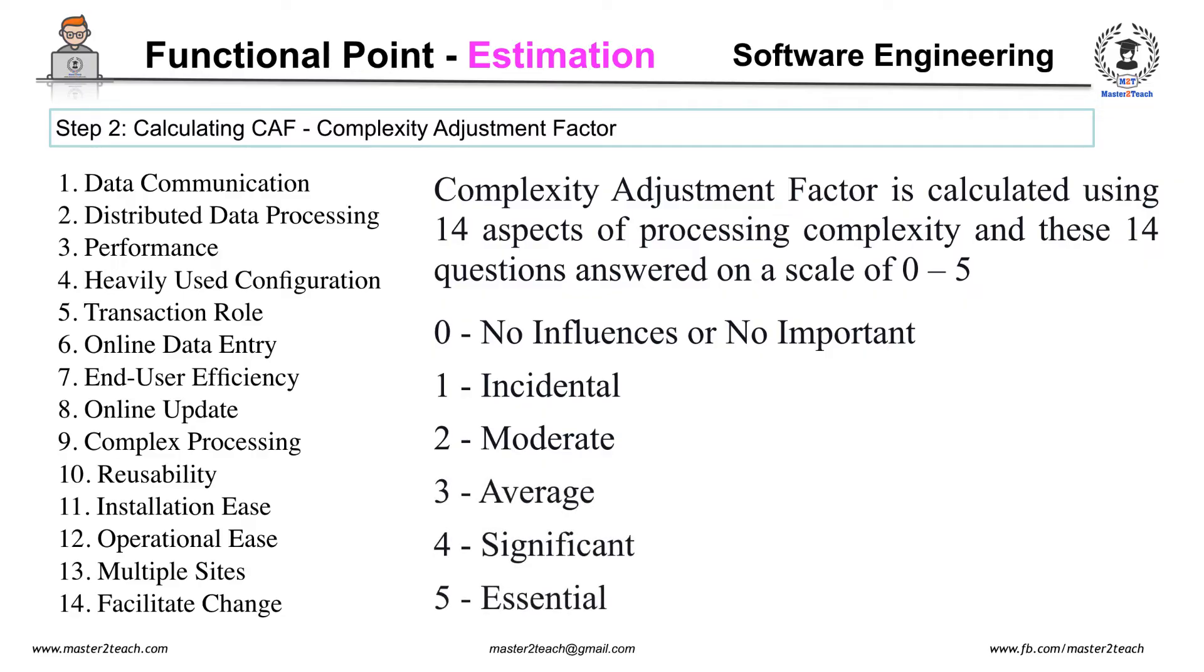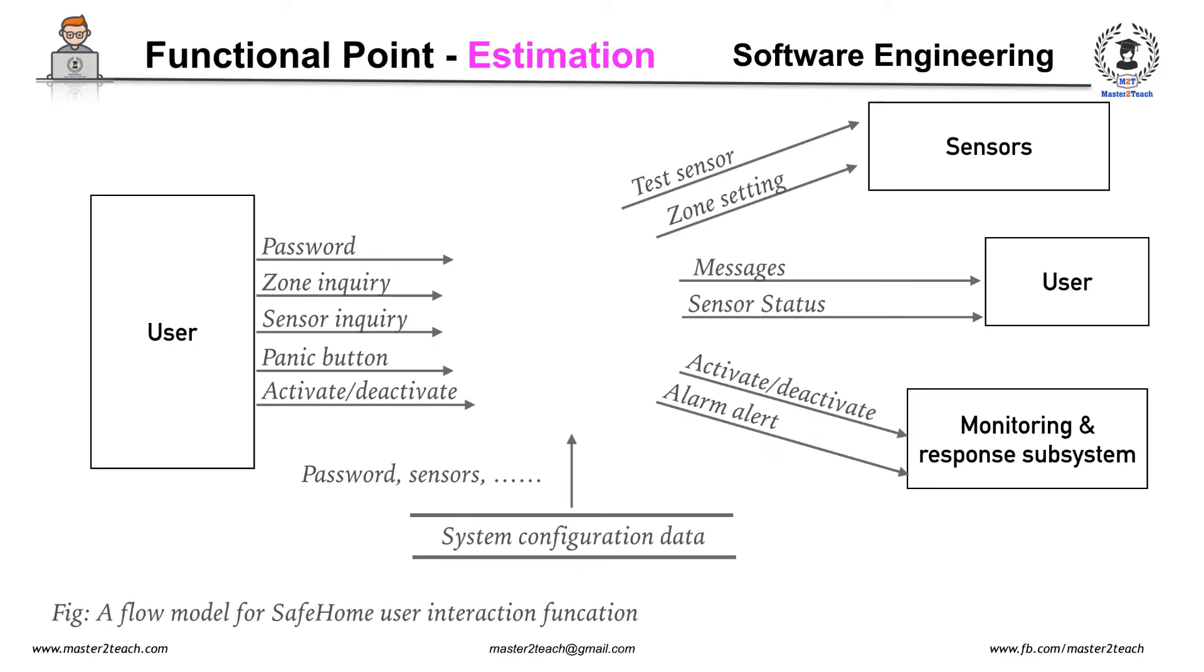To illustrate the use of functional point matrix, let's see a simple analysis model: SafeHome. The function manages user interaction, accepting a user password to activate or deactivate the system and allows inquiries on the status of security zones and various security sensors. The function displays a series of prompting messages and sends appropriate control signals to various components of the security system. The data flow diagram is evaluated to determine a set of key information domain measures required for computations of the function point matrix.